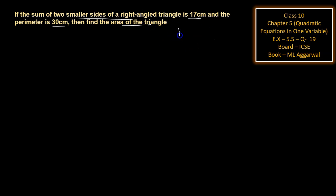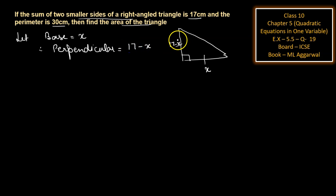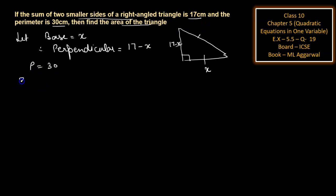So first of all, we draw here a right angle triangle. A right angle triangle means one angle is 90 degrees. The smaller sides are perpendicular and base, and their sum is 17. Let base equal x, then perpendicular is equal to 17 minus x. Now, the perimeter is given as 30, and the sum of two sides is 17, so the third side is 30 minus 17, which equals 13 cm.